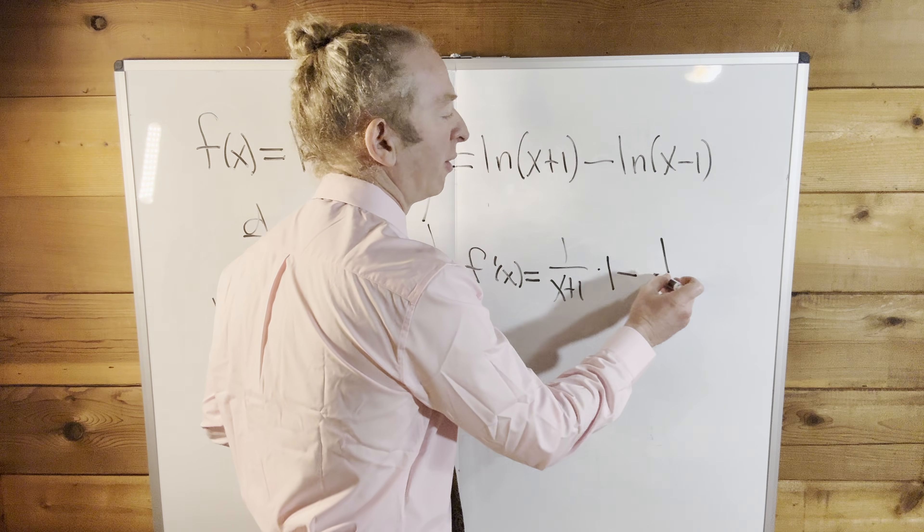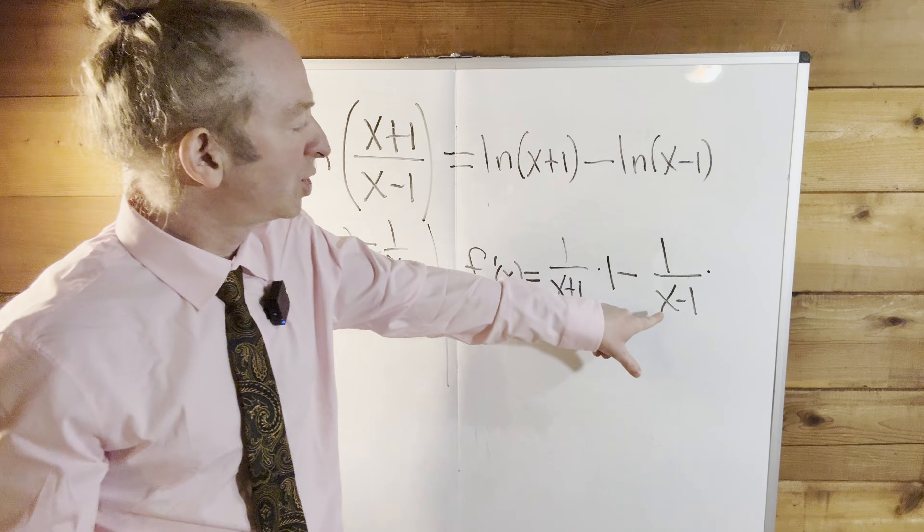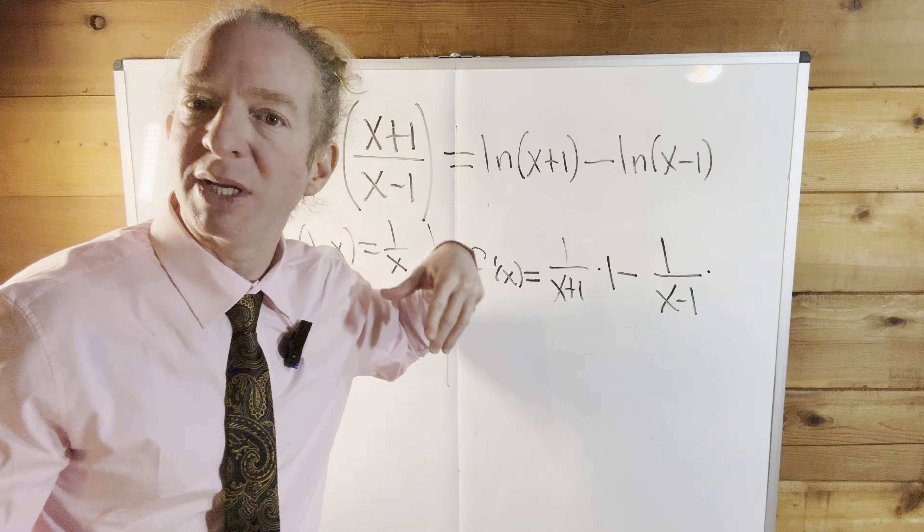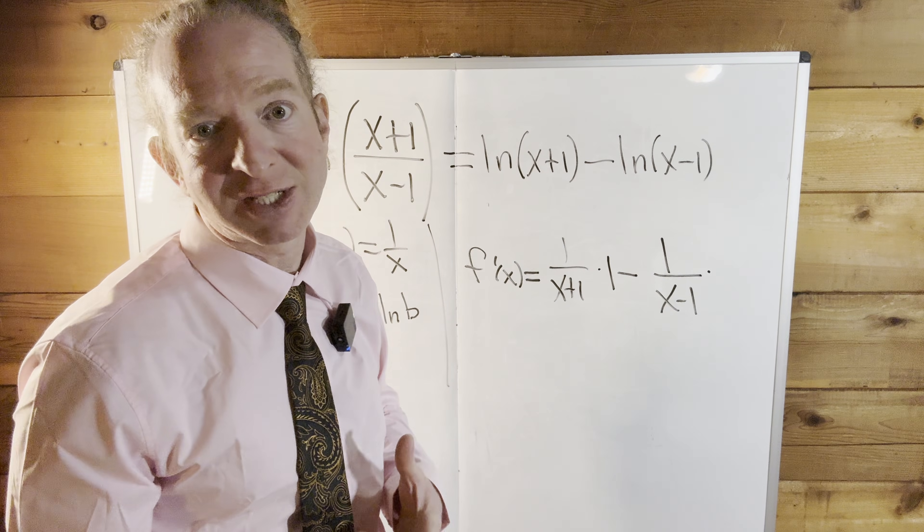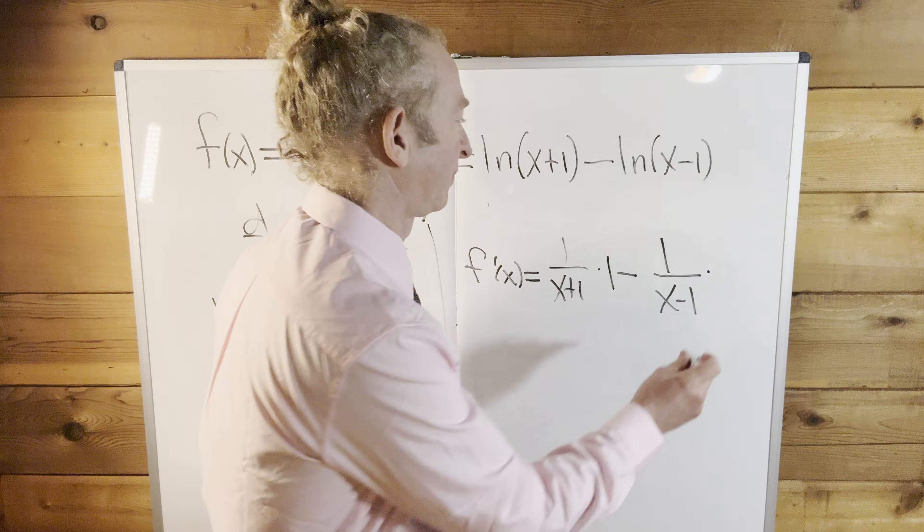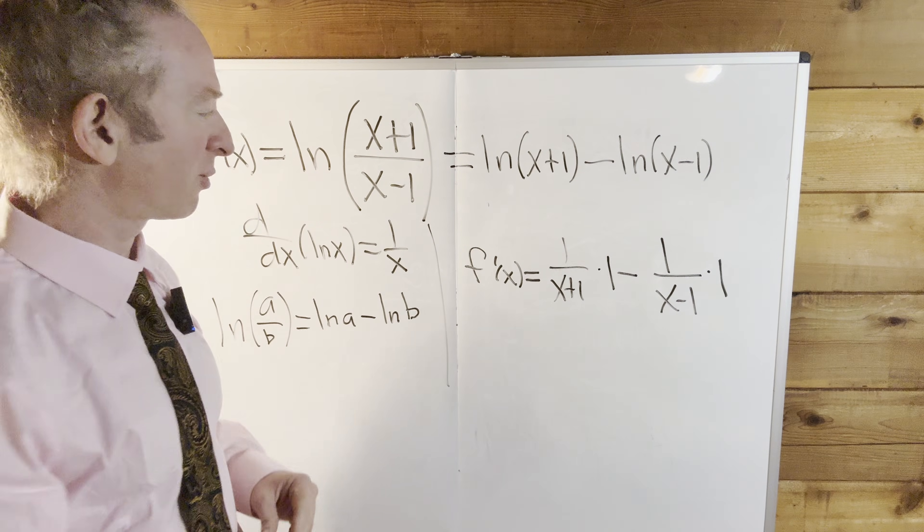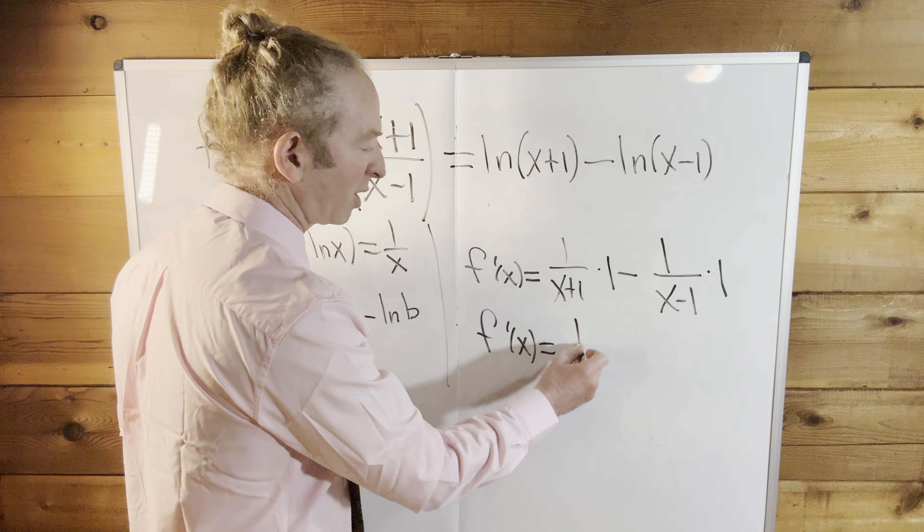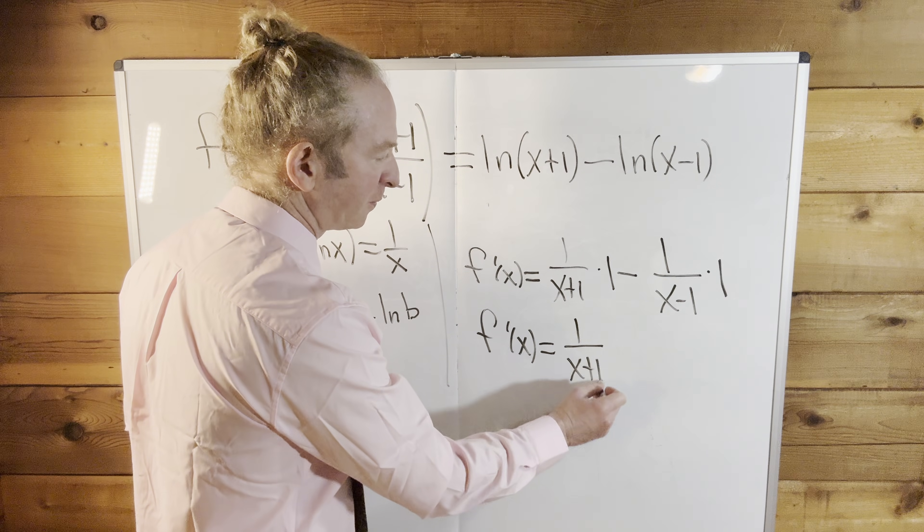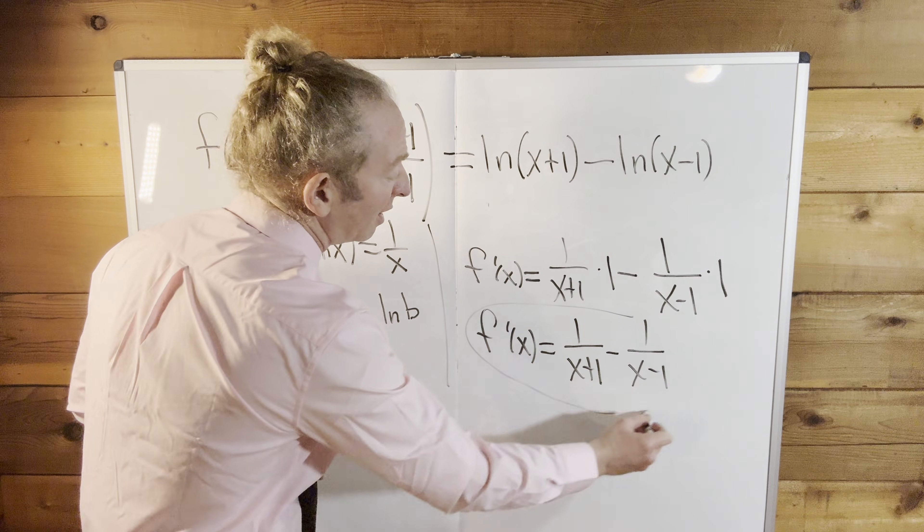Minus 1 over x minus 1 times the derivative of the inside function, which again, the derivative of x minus 1 is 1. Because the derivative of x is 1 and the derivative of a constant is 0. So I'm just going to erase the 1s and write it again. f prime of x is equal to 1 over x plus 1 minus 1 over x minus 1. And that should be the final answer.